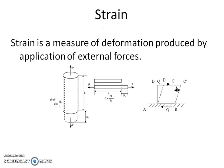Now, what is strain? Strain is the measurement of deformation produced by the application of external forces on a member. In the case of a tensile force, the member will elongate. The additional increase in length due to the application of tensile force P is the change in length. This change in length per unit length is the strain, epsilon. Epsilon equals delta L divided by L₀, where delta L is the change in length and L₀ is the original length.